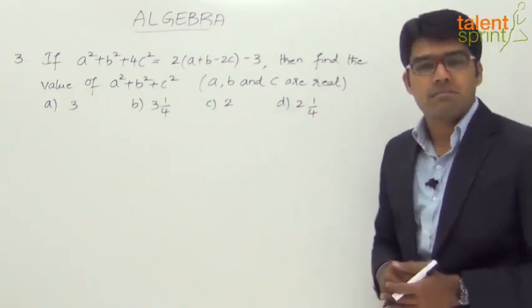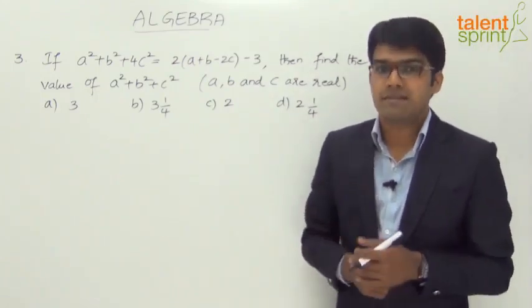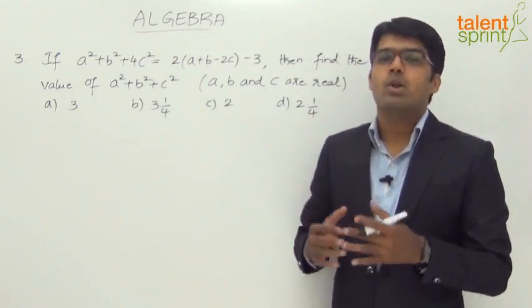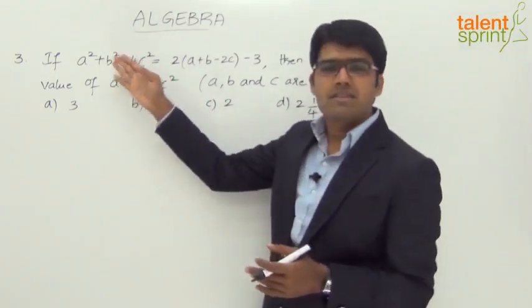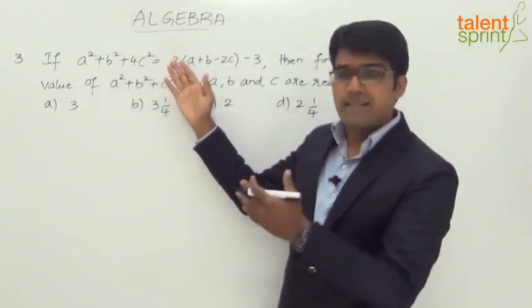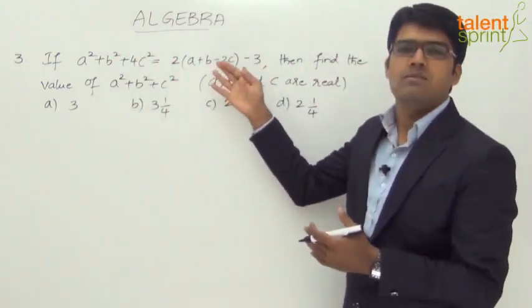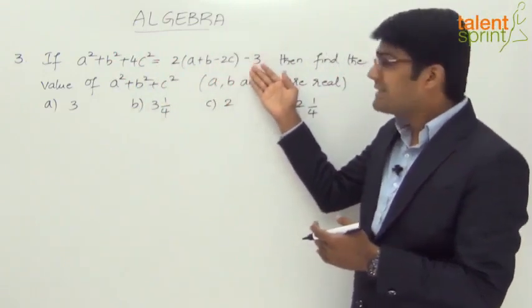If you try and compare question number 3 with question 2 that we discussed, you will find there is a lot of similarity. We have an expression with the terms a², b², c² on the left hand side, then we have some equation in terms of a, b, and c minus 3.